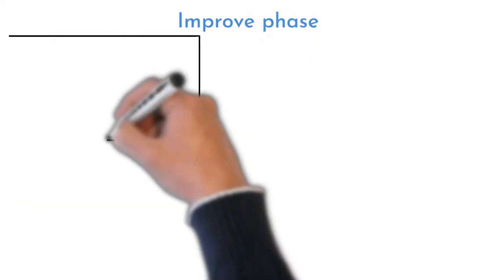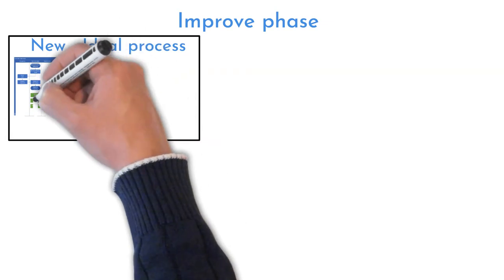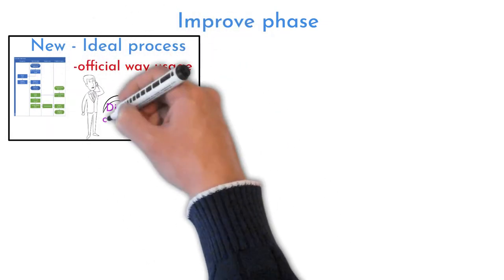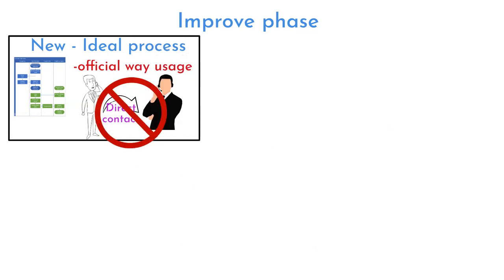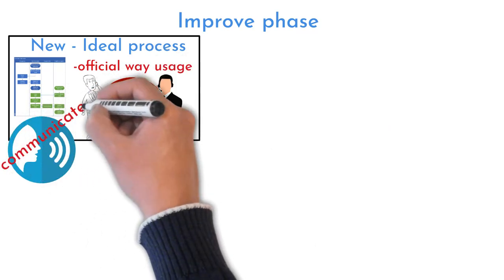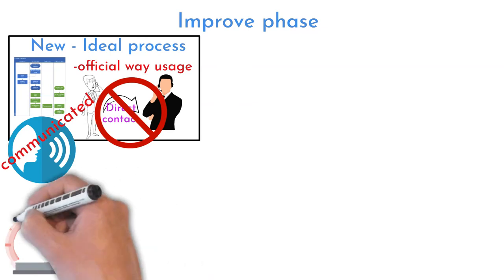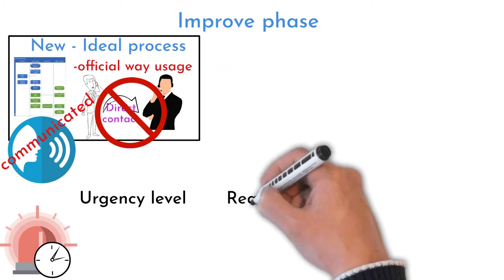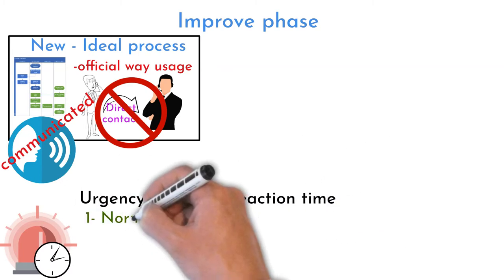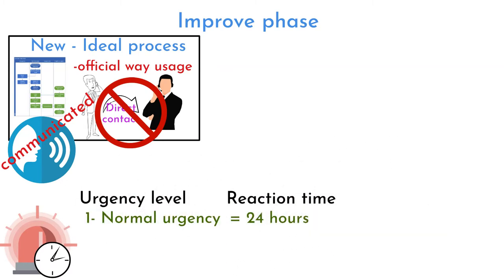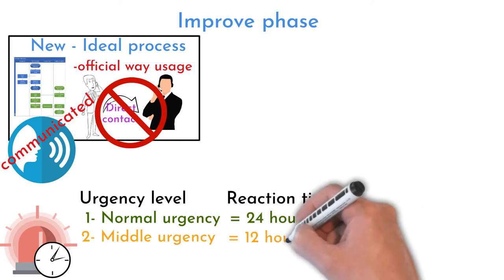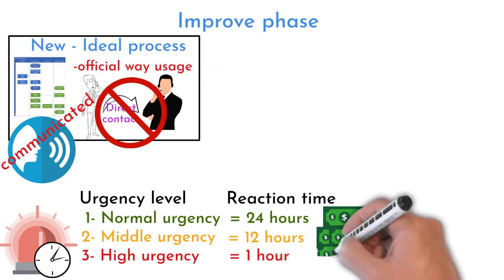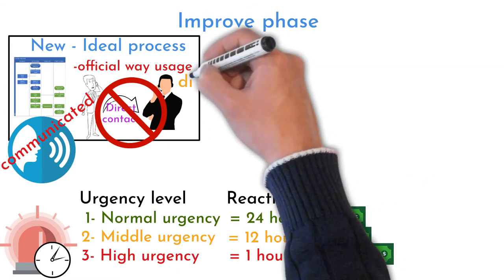The team has described how the new ideal process should look like. It is important that as many help desk requests as possible go the official way. Direct calls were banned, and this new regulation was communicated to all customers. However, the new process setup allowed choosing urgency levels. There are three urgency levels aligned with reaction time. Normal urgency expected reaction is within 24 hours. Middle urgency within 12 hours. Highest urgency expected reaction within one hour. Different urgency levels are priced differently and invoiced by end of the month.